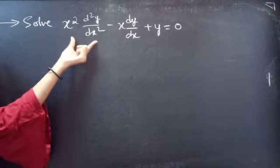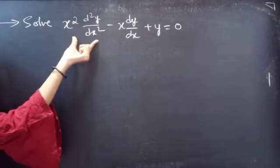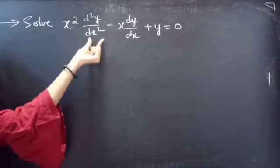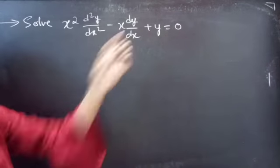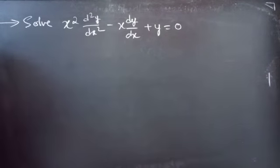Problem: solve x squared times d²y/dx² minus x times dy/dx plus y equals to 0.